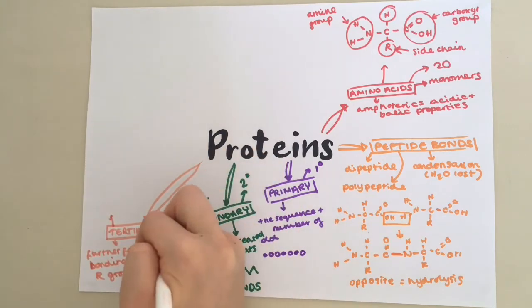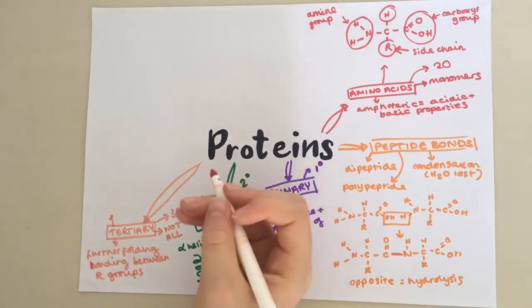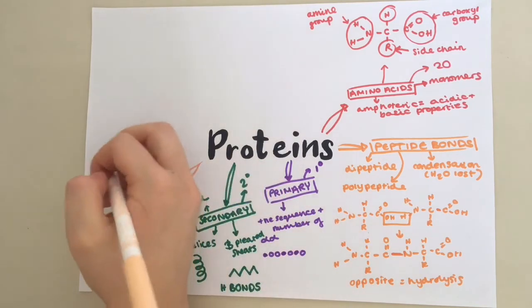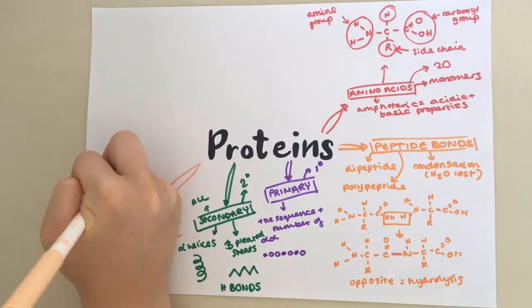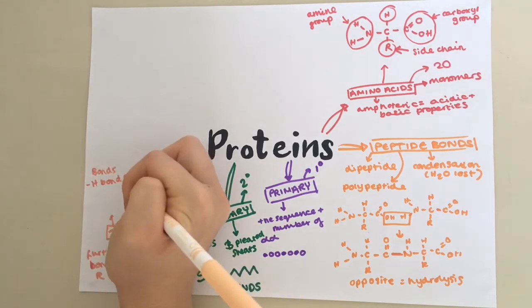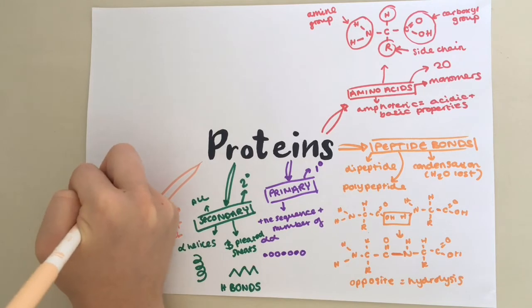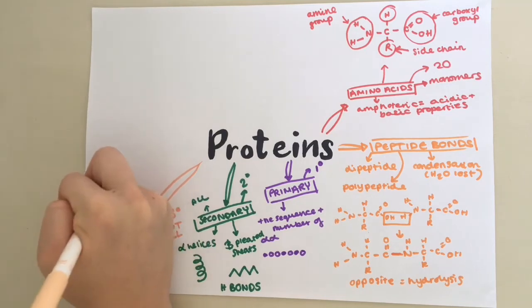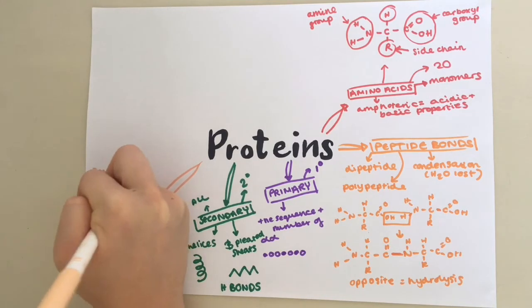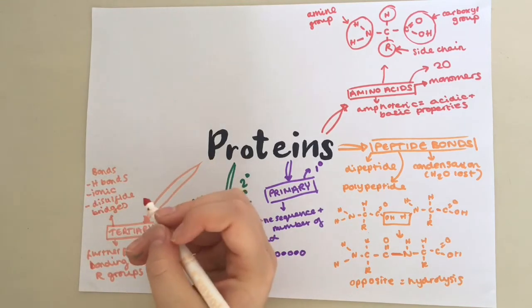Not all proteins will have tertiary structure, only some. The types of bonds in tertiary structure are hydrogen bonds, which are numerous but weak. Ionic bonds, which are stronger and vulnerable to changes in pH and temperature. And then you have disulfide bridges, which are very strong covalent bonds.